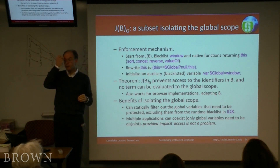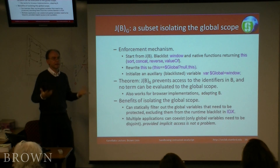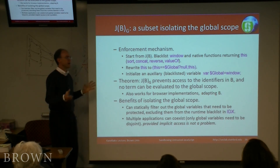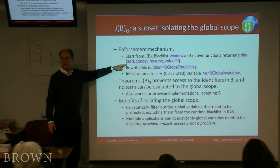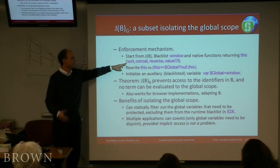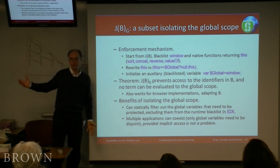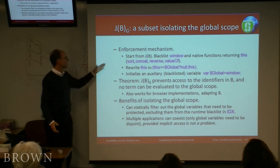We also have to prevent access to what look like pretty innocuous functions — sorting, concatenating, reversing arrays — because when called in certain ways without a particular argument, they return the global scope as a default value. So even these seemingly harmless built-in functions need to be restricted.